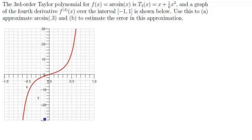The third order Taylor polynomial for arcsin is T3(x) = x + (1/6)x³, and a graph of the fourth derivative of arcsin over the interval [-1, 1] is shown below. Use this to (a) approximate arcsin(0.3) and (b) estimate the error of this approximation.